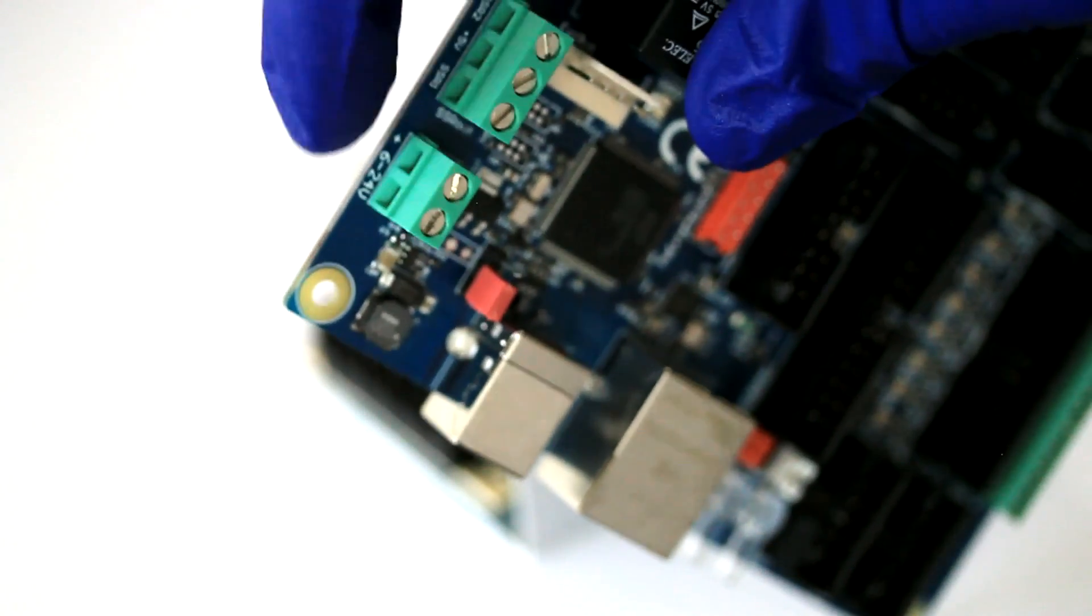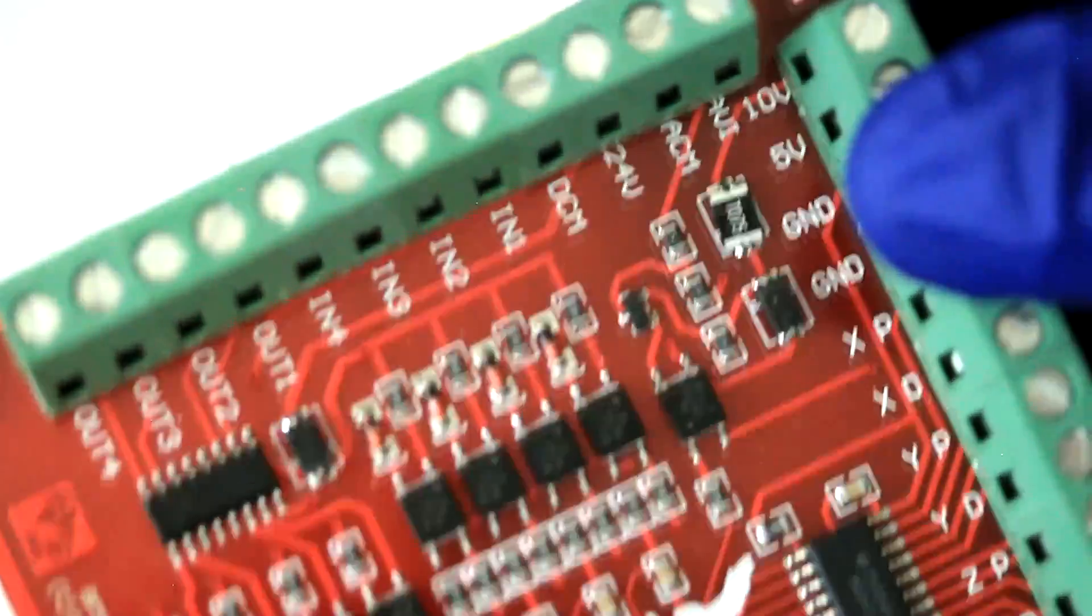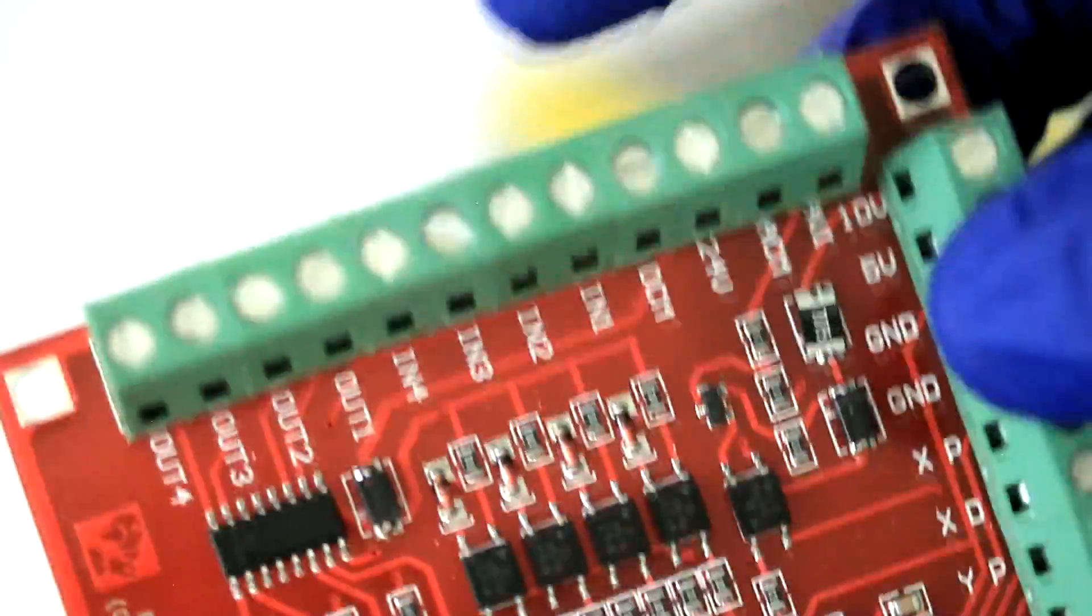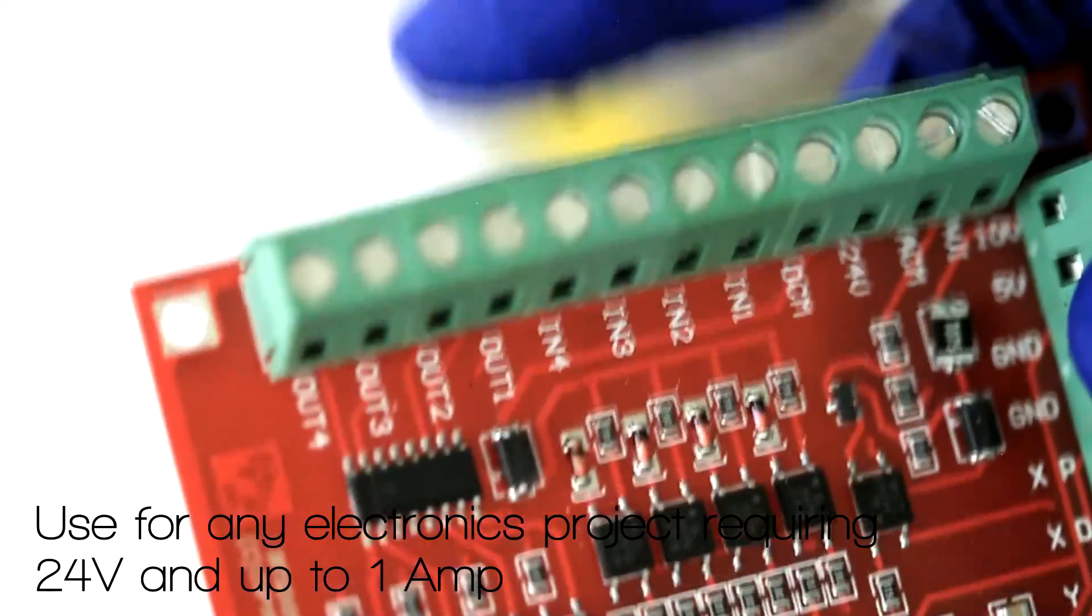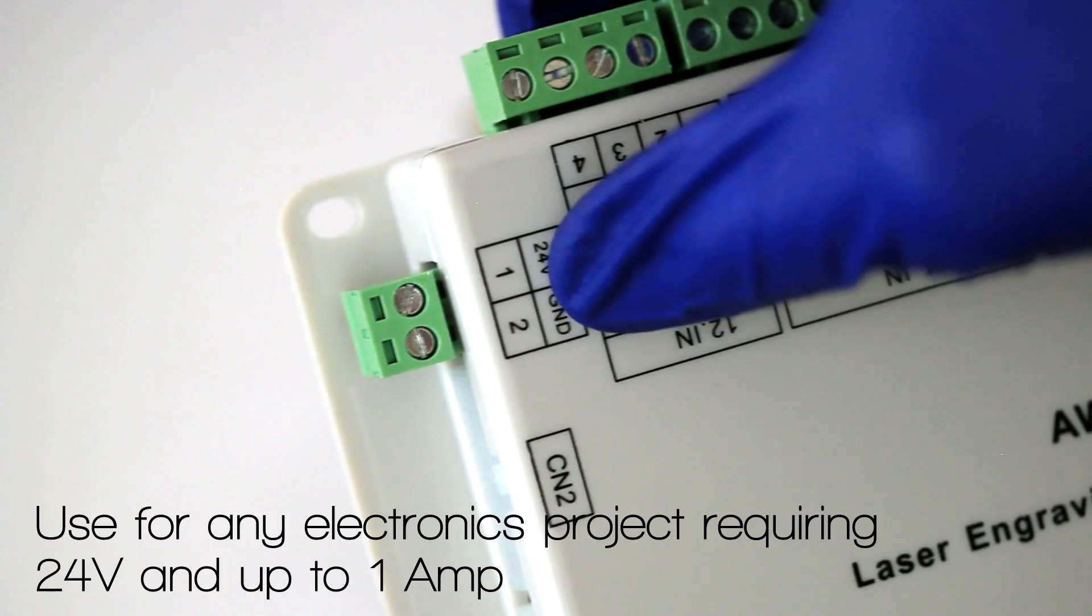for the external connection for power if you need more than 5V, or for the Mach3 USB external power connector for use with the limit switches, the outputs and the spindle operation, or for laser controllers like this one that requires a 24V connection.